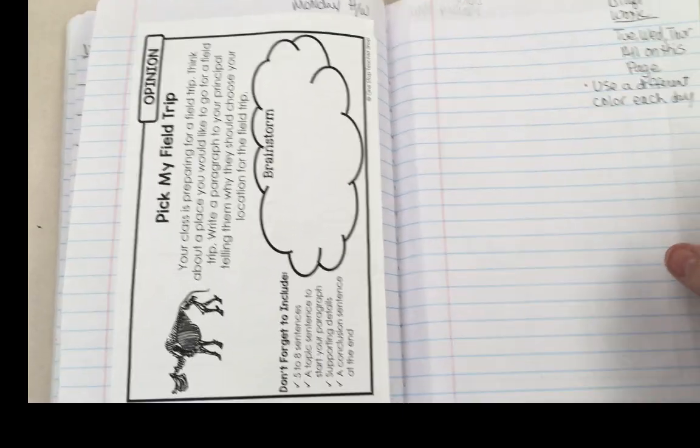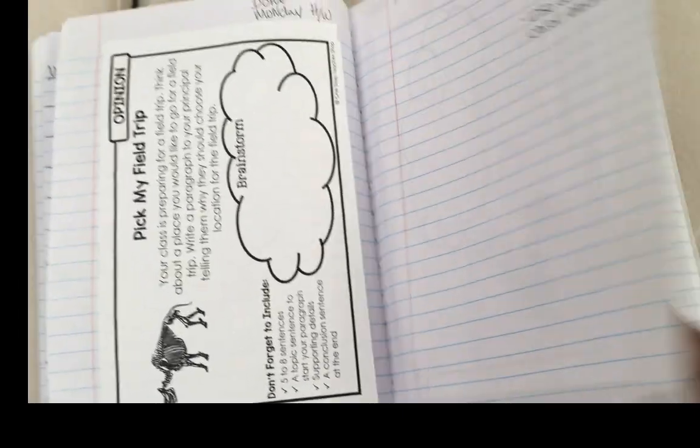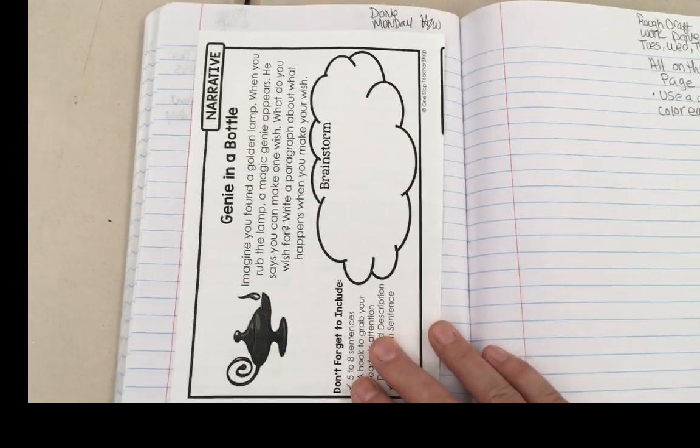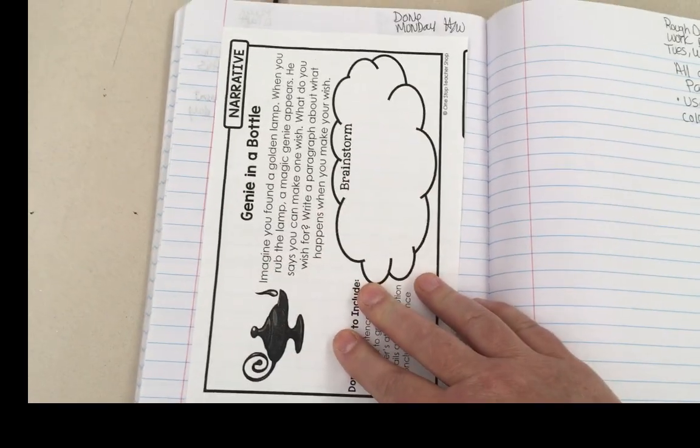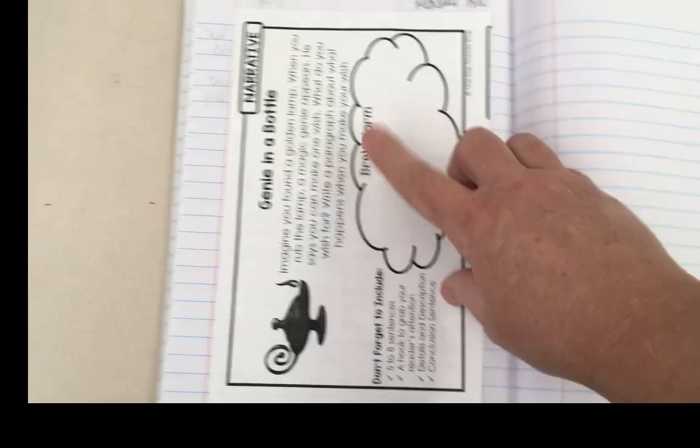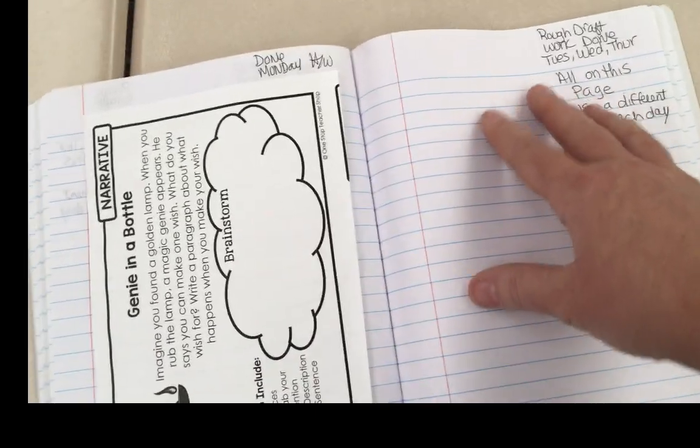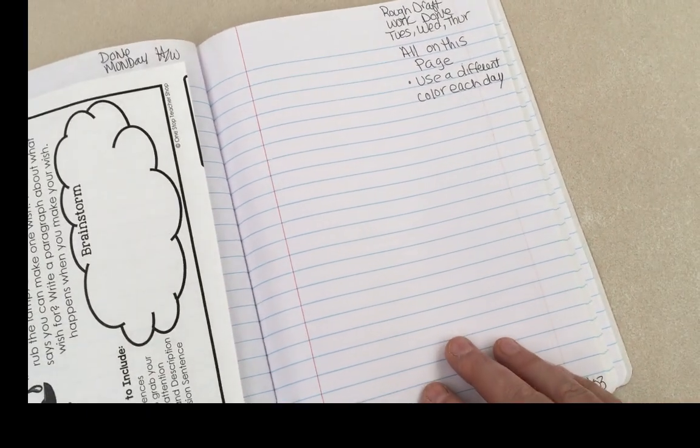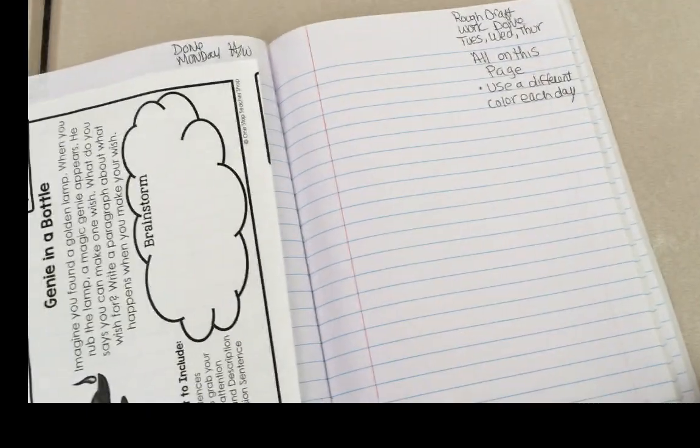So that is last week's paragraph of the week. And then the very next page is the next week's paragraph of the week. And the prompt goes here. Again, your brainstorming happens here Monday night. And then your rough draft work all happens on this one page. That's pretty much it.